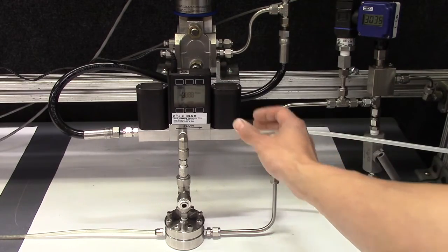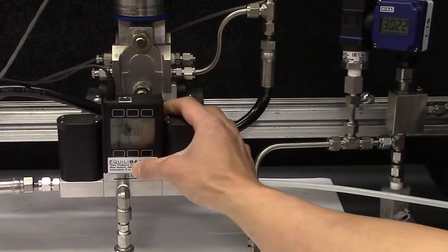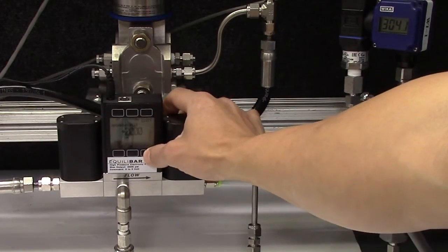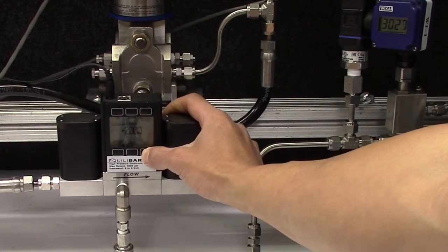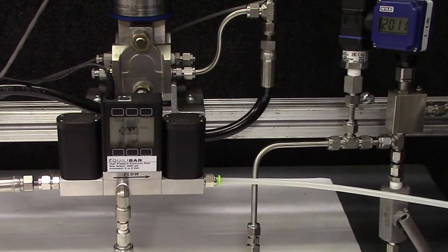Next, we will demonstrate a decrease in pilot pressure. I will adjust the valve down to 2000 PSI, hit set, and the inlet pressure quickly falls to match the pilot pressure.